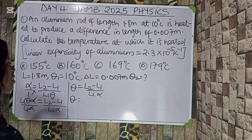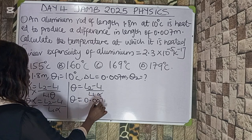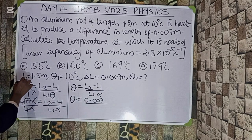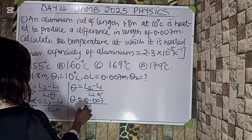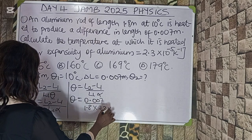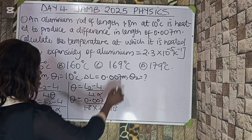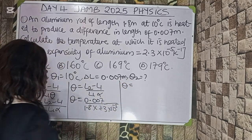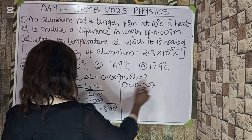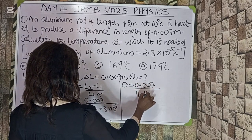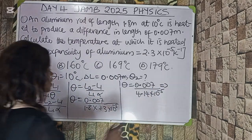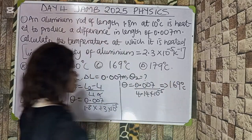So θ = 0.007 divided by (1.8 × 2.3 × 10⁻⁵) = 0.007 divided by 4.14 × 10⁻⁵. By the time you divide, it gives approximately 169 degrees Celsius. This 169 degrees Celsius is just the temperature rise.